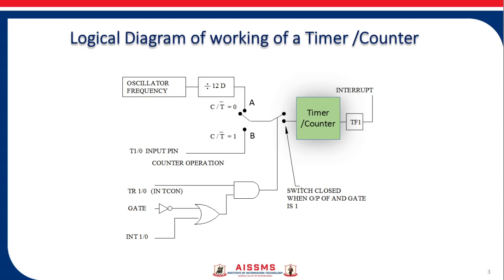What you are seeing is a logical working diagram of a timer or counter. The input to the timer can either be clock pulses (oscillator frequency divided by 12) or external pulses given to pins T1 and T0 found in Port 3. The selection of whether to configure the device as a timer or counter is done using the C/T̄ bit in the TMOD register. If this bit is 0 it works as a timer, and if it is 1 it works as a counter.